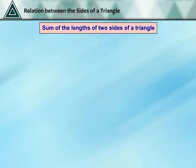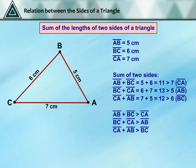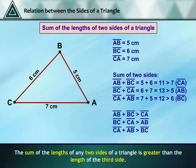Sum of the lengths of two sides of a triangle: draw a triangle ABC and find the sum of any two sides, then compare it with the third side. We see that the sum of the lengths of any two sides of a triangle is greater than the length of the third side.